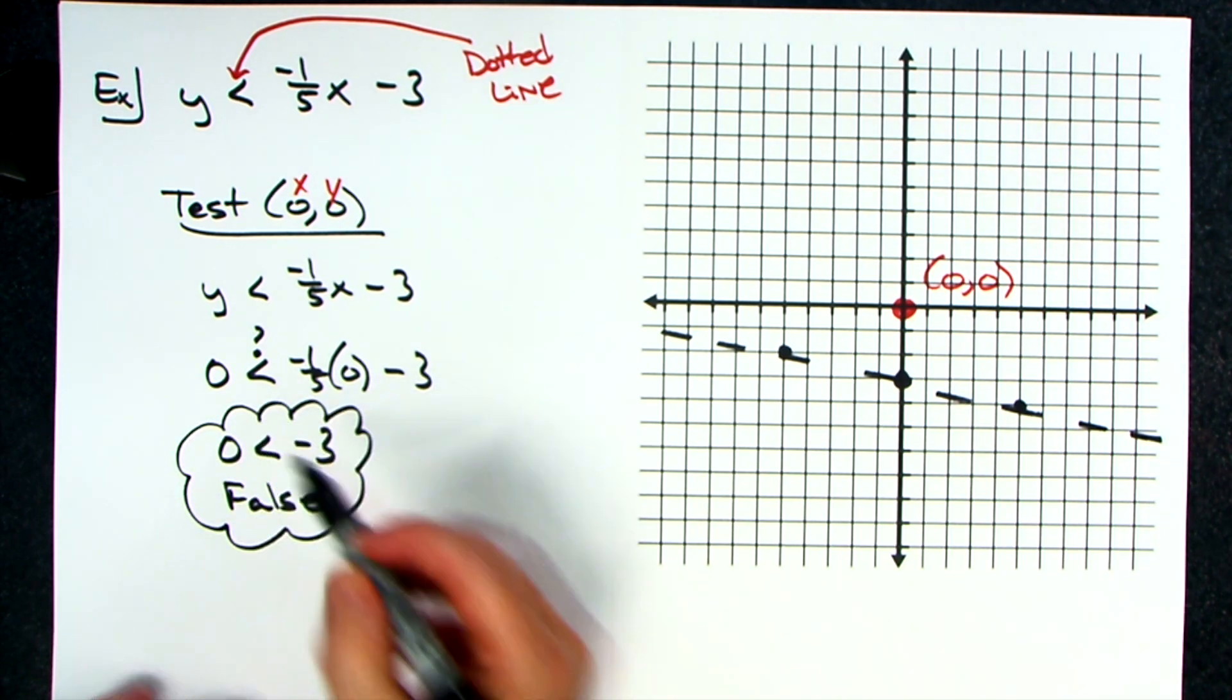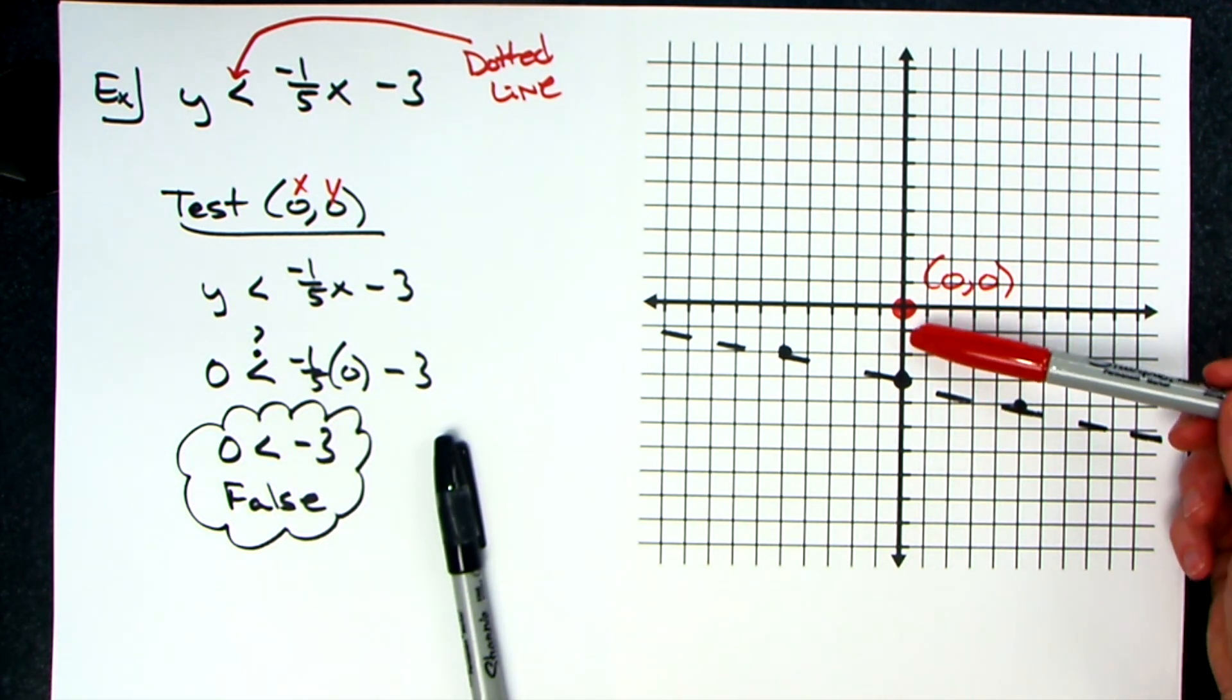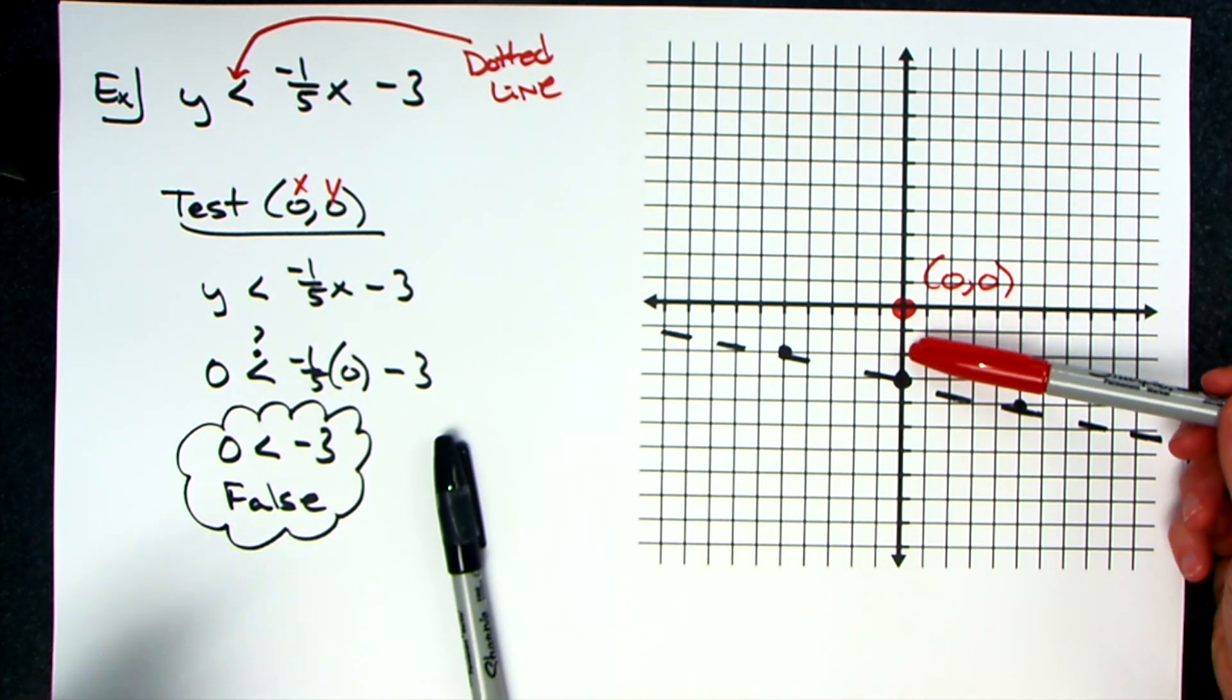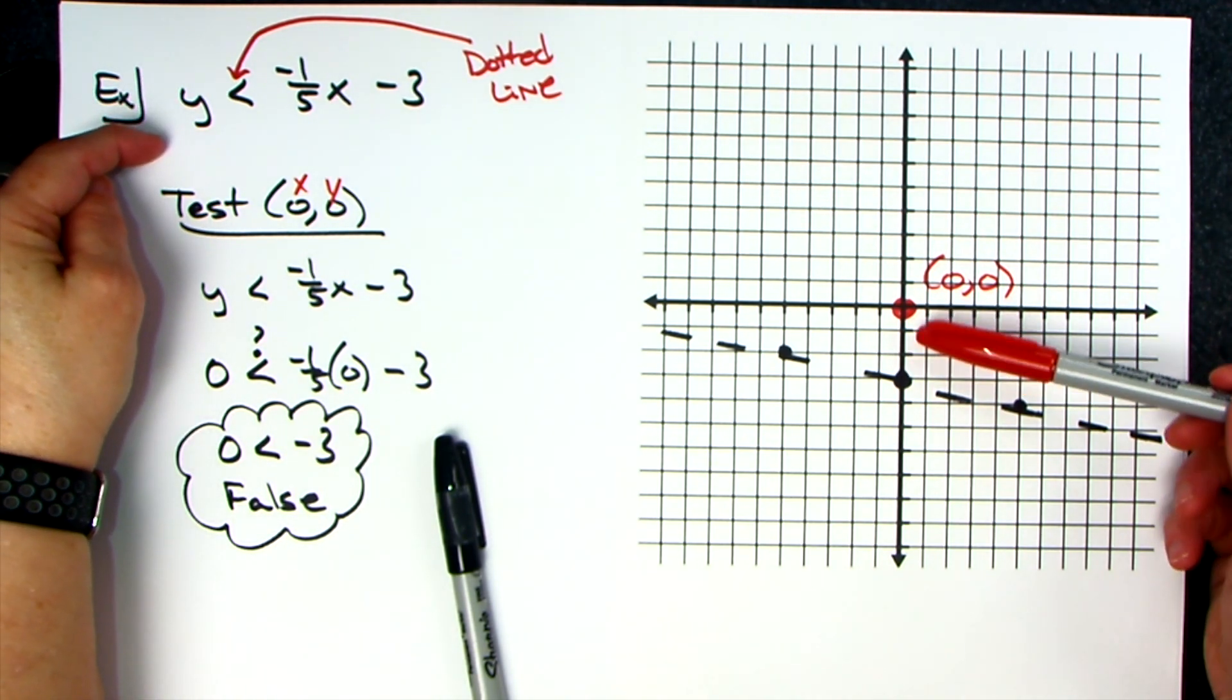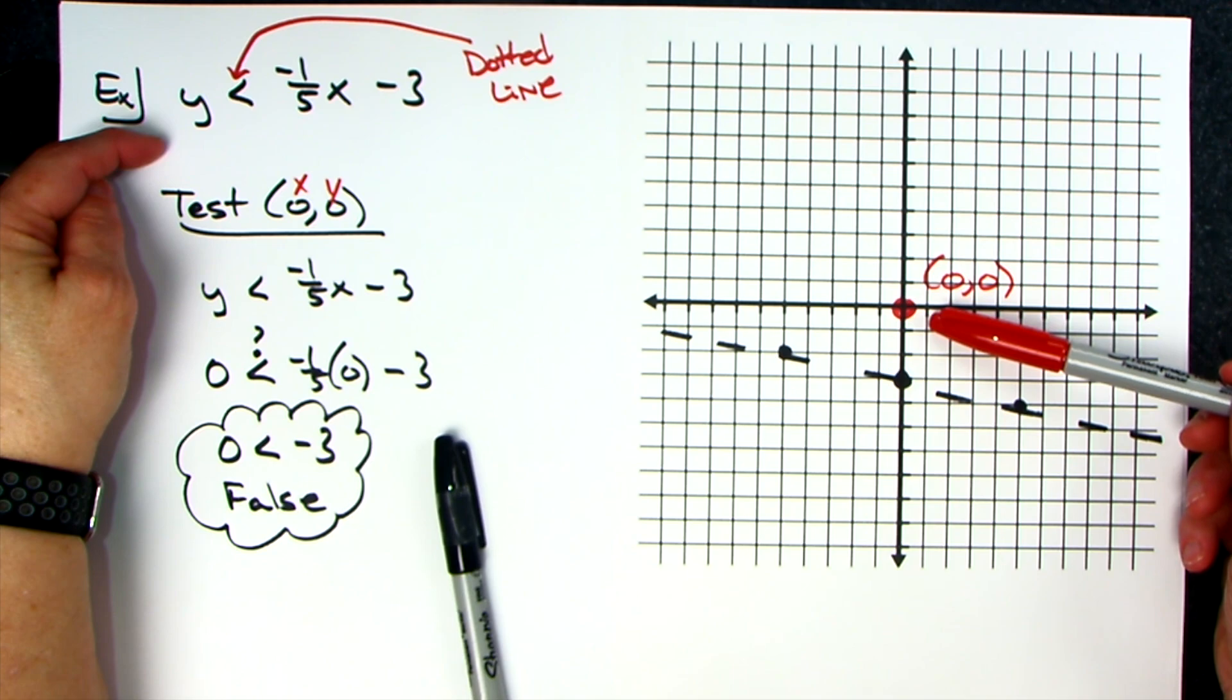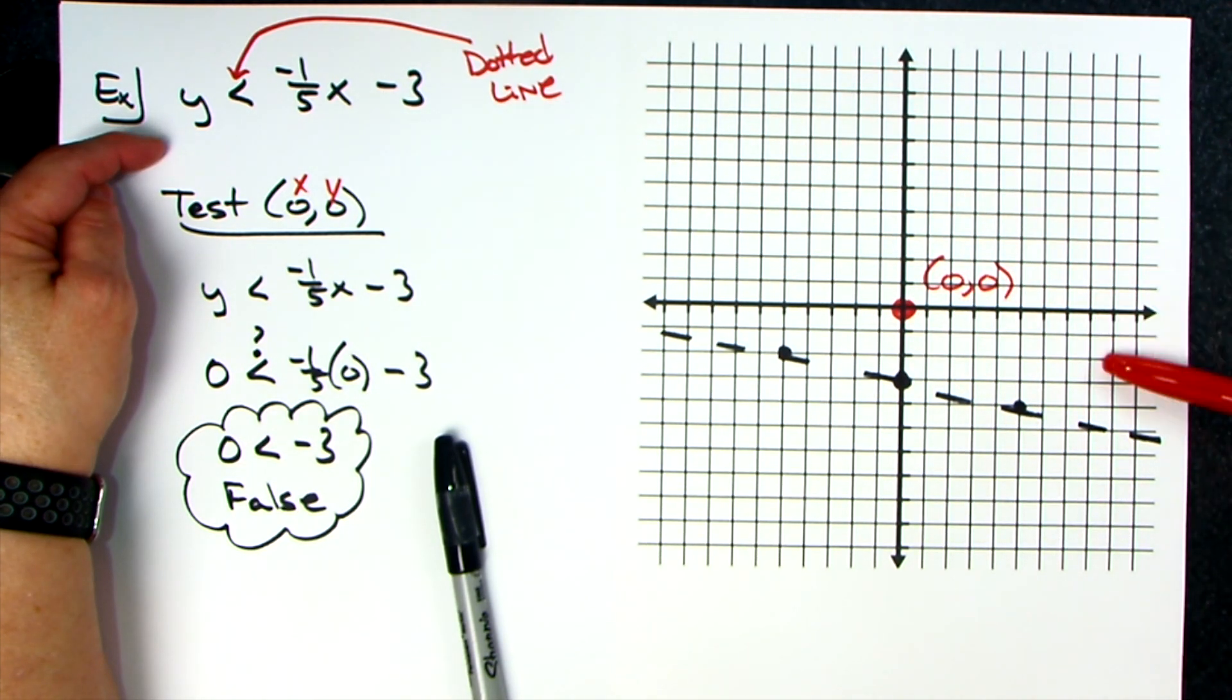All right, now what that is telling you: this point zero zero that's located right here will not make this inequality true. If this point does not make it true, none of the points on this side of the line will make it true.